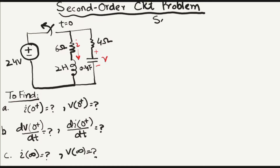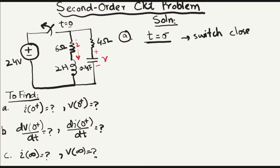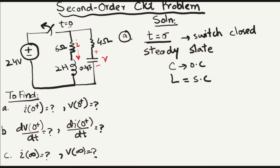Let's move to the solution for part A. If the switch is closed a long time before t equals 0, it means the circuit has reached steady state. So at t less than 0, just before the switching time, the switch is closed and the circuit has reached DC steady state. At steady state, the capacitor acts like an open circuit and the inductor acts like a short circuit.